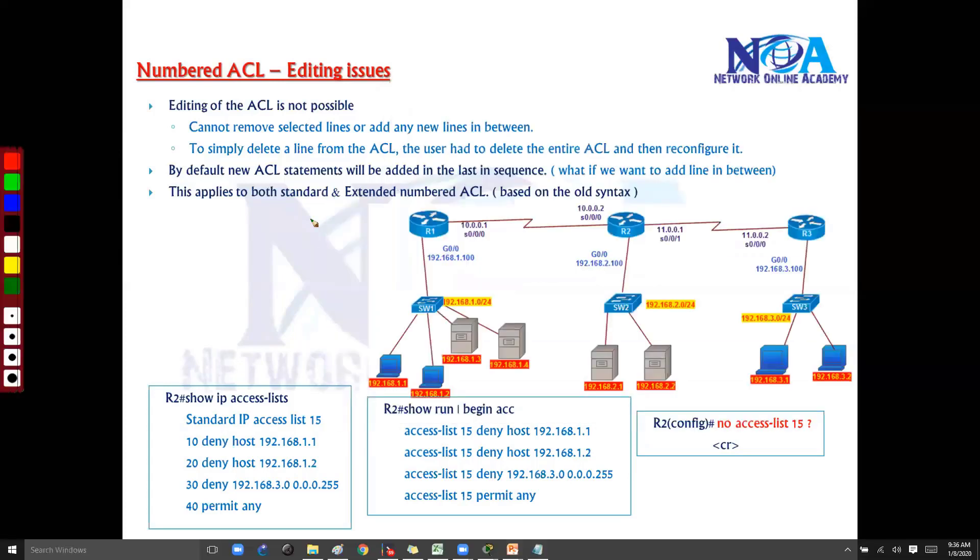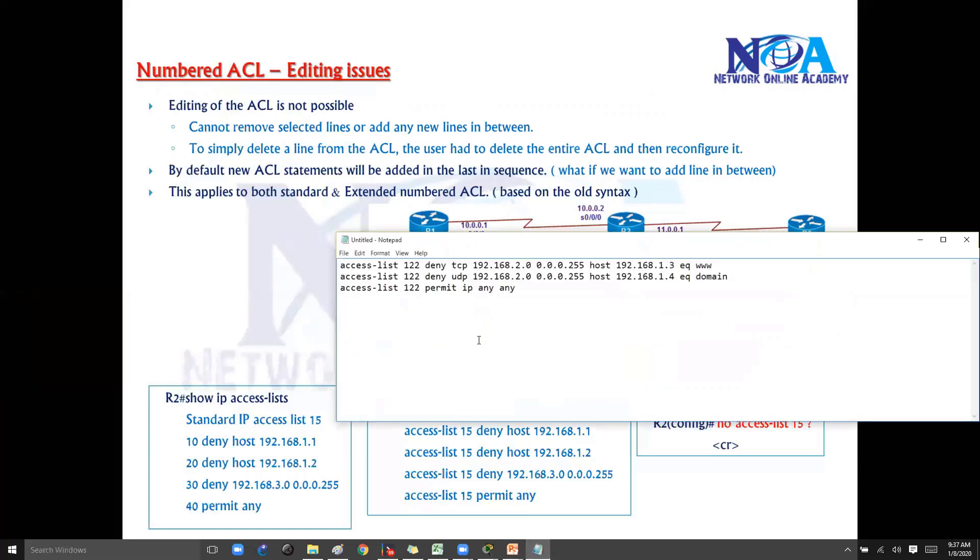So basically, the main issue with the numbered ACL is editing is one of the major problems. Which means if you want to add or remove any specific lines, like I said, you cannot remove the selected lines. And just now I tried to remove one selected line. Even though I'm saying no and copy paste one single line, it is going to automatically remove the complete ACL. The complete ACL will be removed. Okay, so to simply delete one single line from the ACL, it is going to delete the entire ACL, which means you have to reconfigure everything. So simply what you have to do is you have to copy this in the notepad and then, let's say you want to add a new line, you need to add a new line in the notepad, or rearrange the rules.